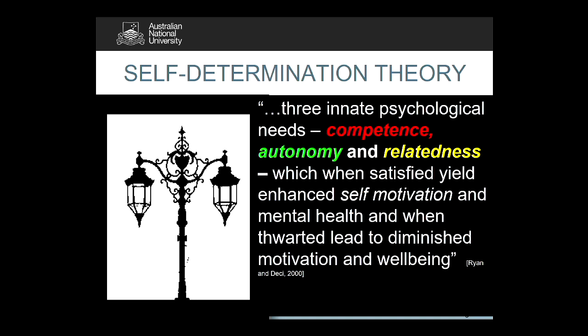Human beings can be proactive and engaged, or alternatively passive and alienated, largely as a function of the social conditions in which they function. With those key words of motivation, engagement, alienation, and passivity, that's where I'm coming from for why it might be relevant to education. Self-determination theory states that the three innate psychological needs that facilitate motivation, assimilation of information, behavioural regulation and wellbeing are: competence — the knowledge that you can deal with your environment; autonomy — that you have control of your direction and choices, even if it's supported autonomy; and relatedness — that you have meaningful connections with others.